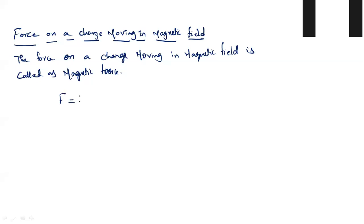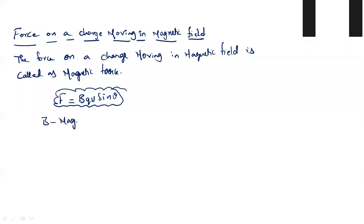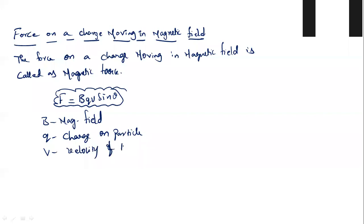Magnetic force is given by F equals BQV sin theta, where B represents magnetic field, Q is charge on the particle, V is velocity of the particle, and theta is the angle between directions of magnetic field and velocity.